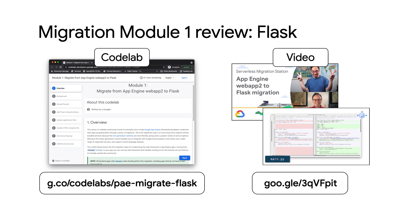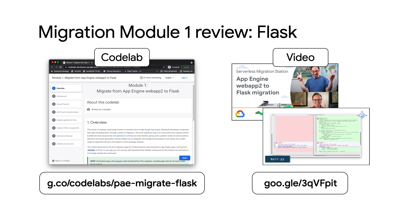You got it, Martin. In module 1, we already migrated from App Engine's WebApp 2 framework to Flask, a popular framework in the Python community. While WebApp 2 apps run on App Engine, Flask apps run on App Engine and most other hosting services, so you can move off of App Engine if you ever need to. Pause now to review the module 1 video and its codelab to reacquaint yourself with that migration, because this module picks up from where that one leaves off.